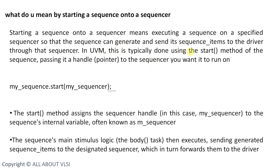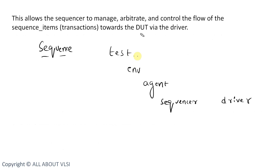In UVM, this is typically done using the start method. The start method establishes a connection between your sequence and sequencer, and sequence items are sent from the sequence to the sequencer when we call this start method. We use the start method inside our test class so that our sequence communicates with our sequencer.